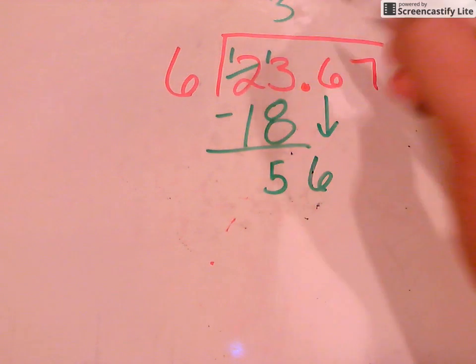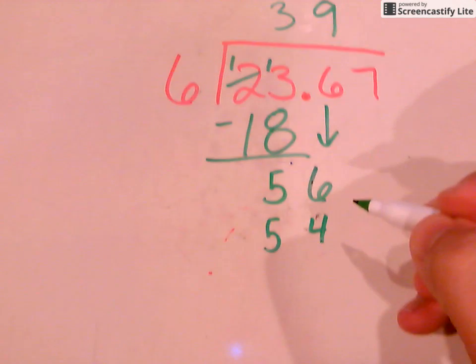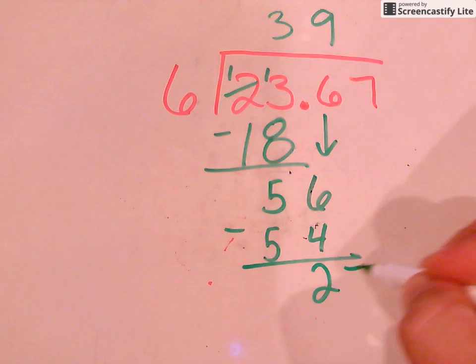6 will go into 56 nine times because 6 times 9 is 54. Do my subtraction again. I've got a 2, bring down 7.